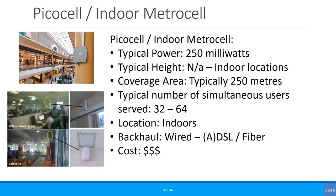Picocells, also referred to as indoor metro cells, have a typical power of 250 milliwatts and cover typically around 250 meters. The typical number of simultaneous users is between 32 and 64 — 32 is very common, but newer ones can serve 64. They are generally indoors with wired backhaul, and slightly more expensive than a femtocell.